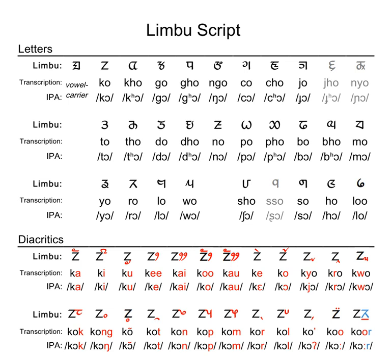Limba language is one of the few Sino-Tibetan languages of the central Himalayas to possess their own scripts. Sources including Sprig 1959 pp. 590–592 and various manuscripts tell us that the Limba or Karat Sirijunga script was devised during the period of Buddhist expansion in Sikkim in the early 18th century, when Limbawan still constituted part of Sikkimese territory.